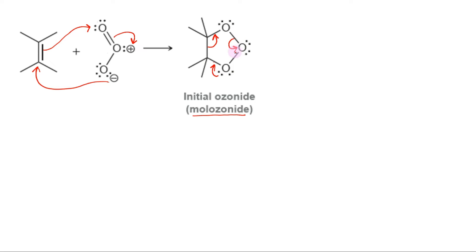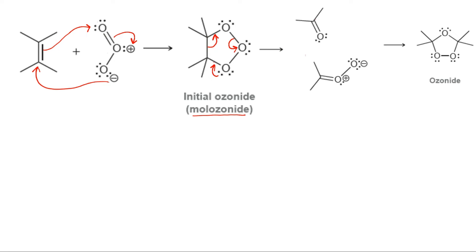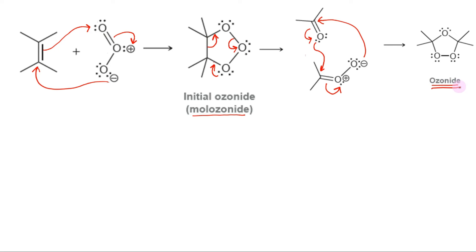The malozonide rearranges rapidly, even at low temperatures, to form an ozonide. Starting with the electron movement by balancing the positive charge on the oxygen by breaking the pi bond towards it, this creates a positive charge on carbon which is balanced by the oxygen lone pair. The electron deficiency on oxygen is balanced by weakly held pi electrons, making carbon positively charged, which is then balanced by the negative charge of the other oxygen. In this way, malozonide rearranges to ozonide.